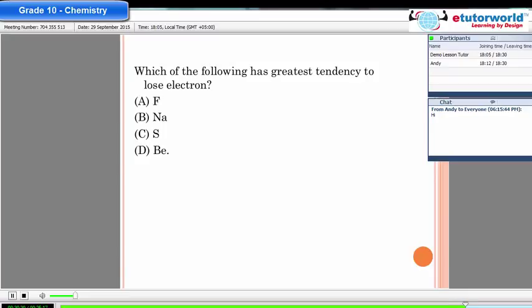Fluorine, sodium, sulfur and beryllium. I think it will be sodium. Fantastic. Reason? Because it's in the first group. Yeah. It's got one valency electron which is very easy for it to lose. Right? Yeah. So the right answer is B. Very good.